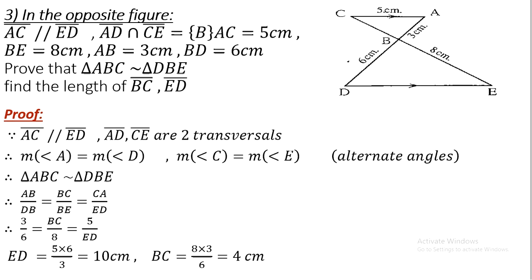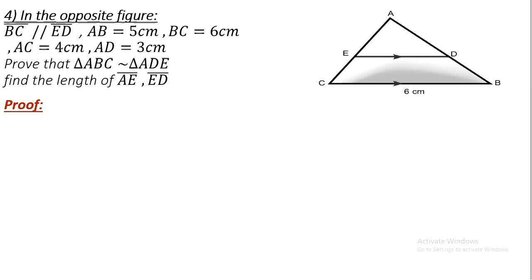Substituting the values: 5 times 6 divided by 3 equals 10 centimeters for the required side length.